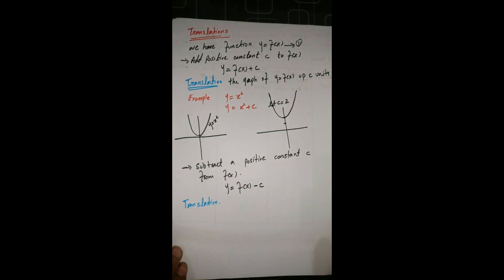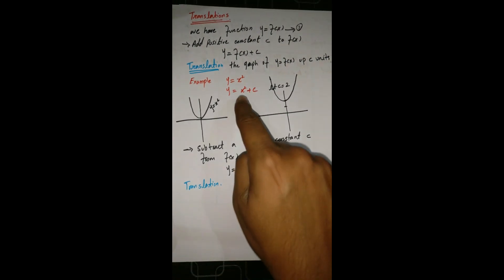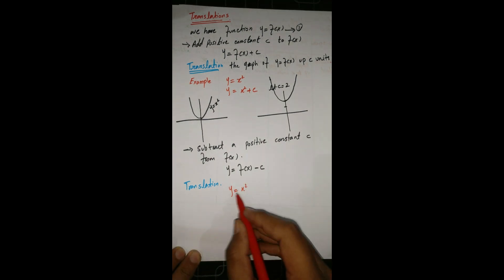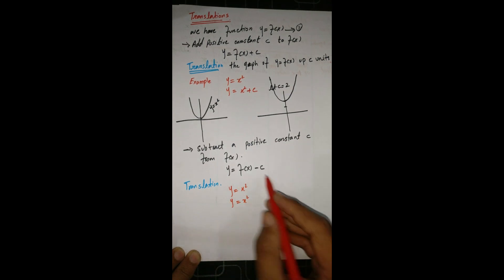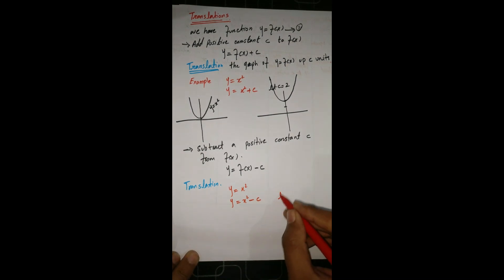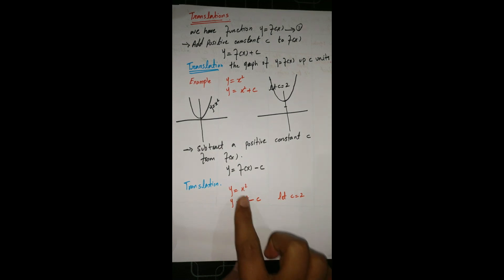To understand the translation, I will draw the graph of the same function. Let's suppose y = x², and we subtract a positive constant c from our function. The value of c could be 2, 3, 4, 5, or any value. We draw both of these graphs to see the effect.